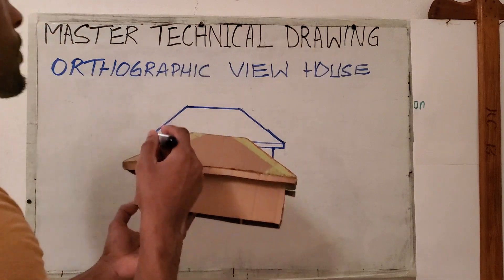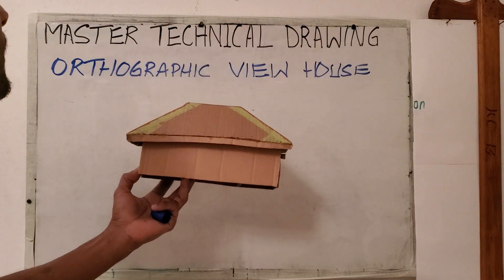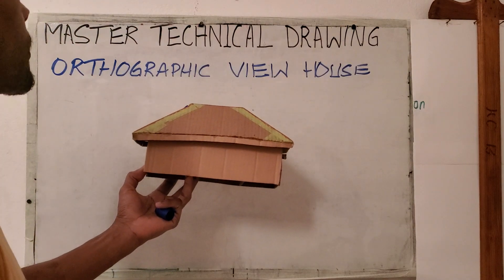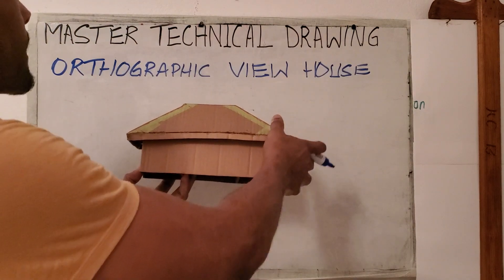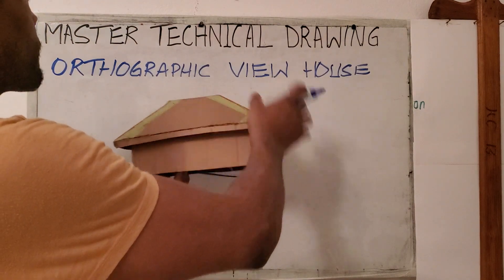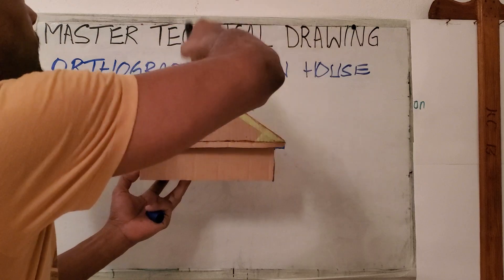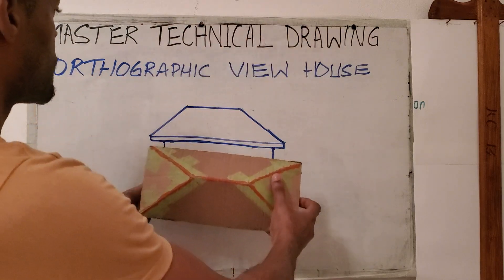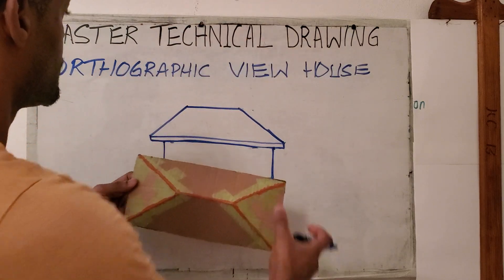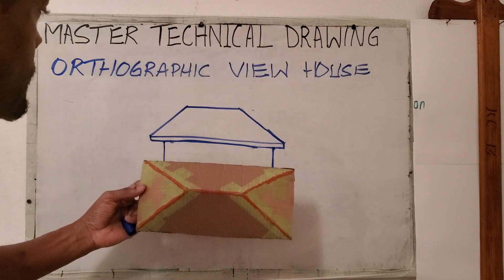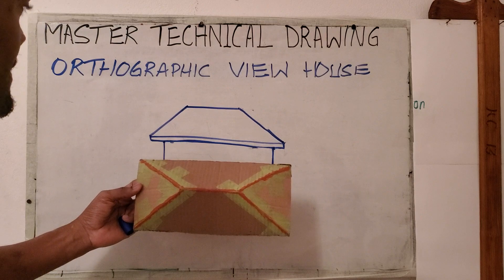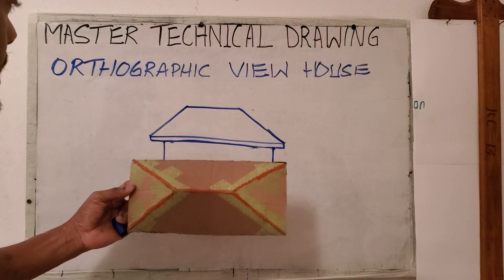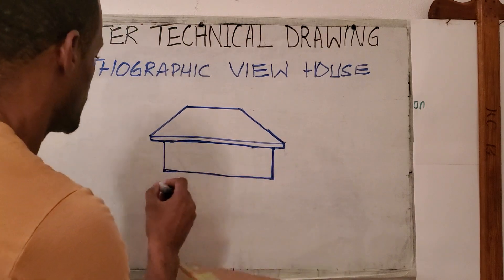So this is our frontal elevation. Now we draw the plan — the plan is obviously from above, so we flip this here, we flip this here, we flip this here, and we draw this.